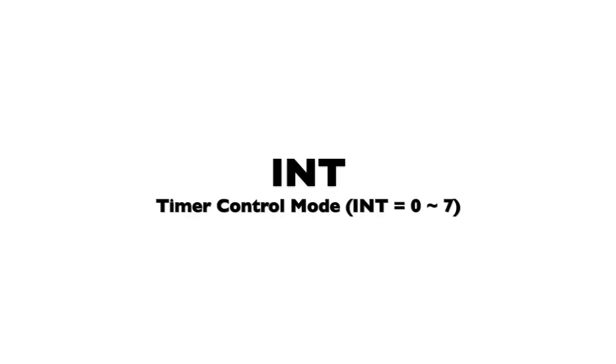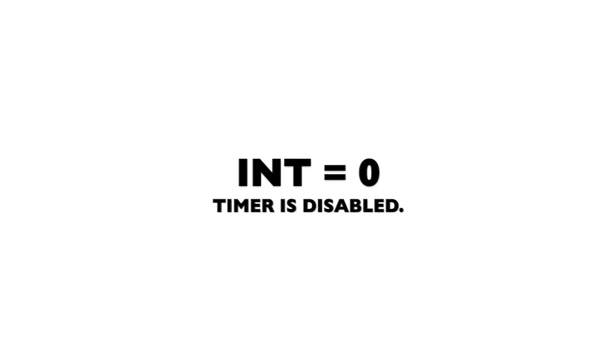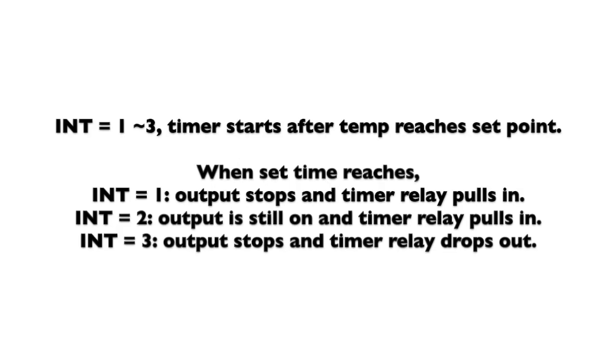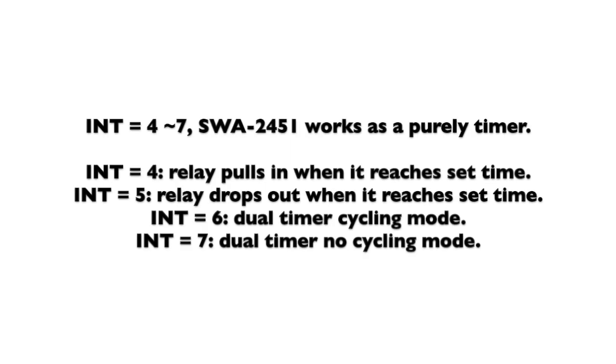INT is your timer control function, which is one of the most important features of this parameter editing. When INT equals zero, this will disable your timer feature. When INT equals one, two, or three, the timer starts after the temperature reaches your set point. When INT equals 4, 5, 6, or 7, the temperature controller works like an independent timer.